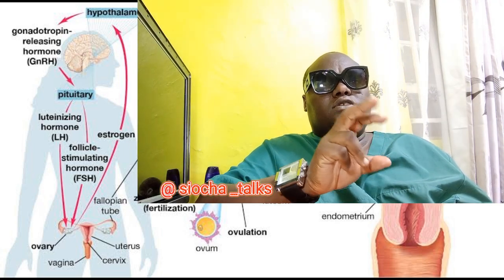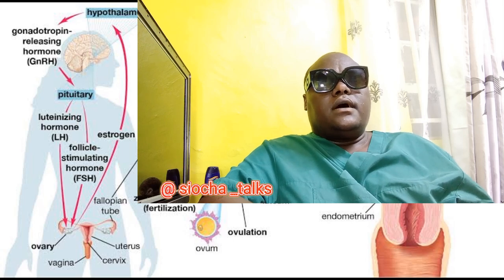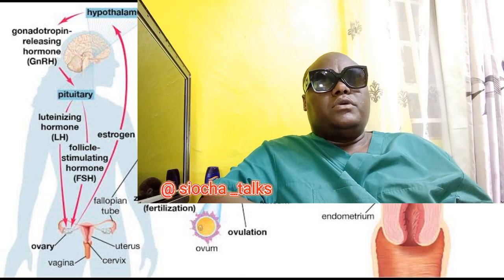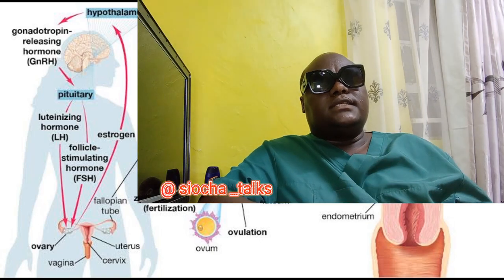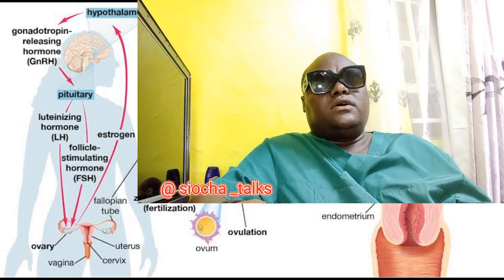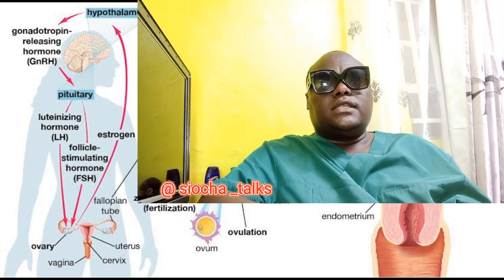Another sign is a change in basal body temperature (BBT), which is the body temperature at rest before any activity or eating. During ovulation, the BBT typically rises slightly and remains elevated until the next menstrual period. A woman who is monitoring her basal body temperature closely will notice this increase during the ovulation period.